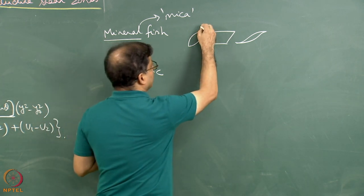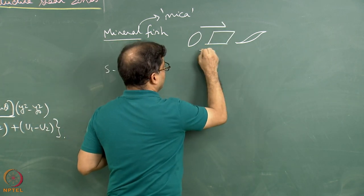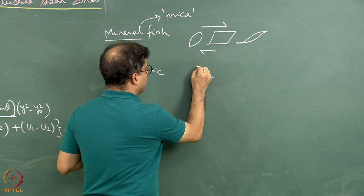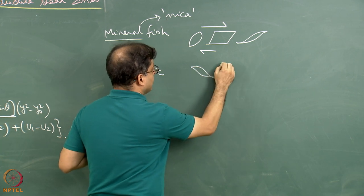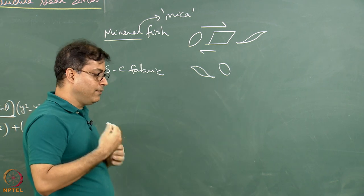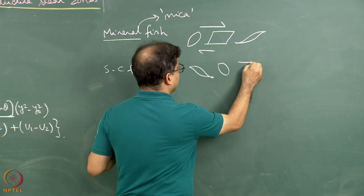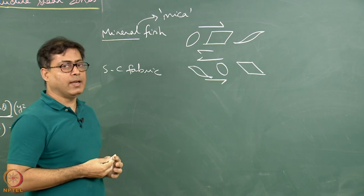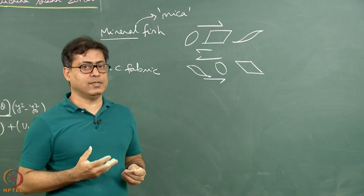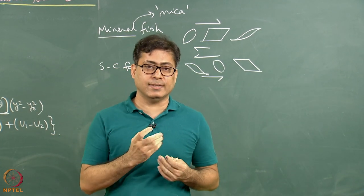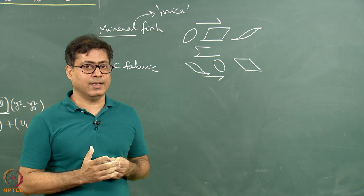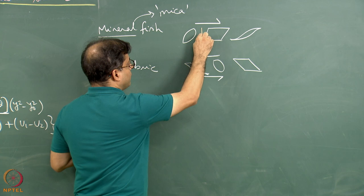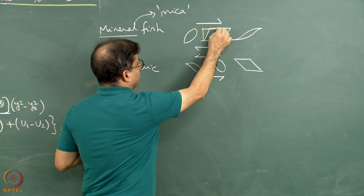As per my drawing here, a top-to-right sense of shearing is indicated. A mineral fish under a top-to-left sense of shearing will have this kind of geometry. If it is a mica grain, we know that in 90 percent of cases the mica grains in thin section, if undeformed, are rectangular in geometry.